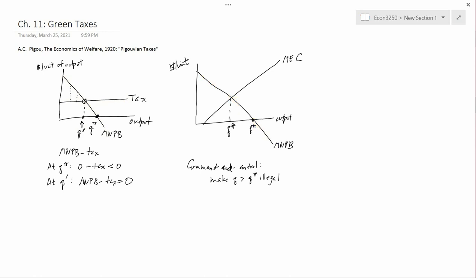So all we need to do is apply that insight to the right-hand diagram. In other words, let me use the left-hand diagram first. If you want to go back, if you know that you want to hit Q star, then you go up to the MNPB curve and over, and that will tell you what the tax rate needs to be in order to get Q star.